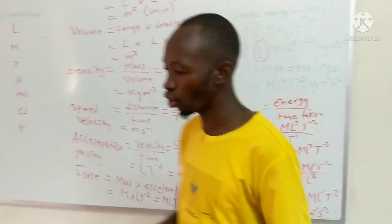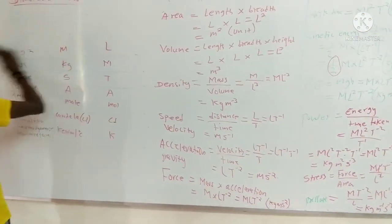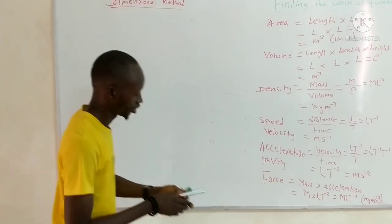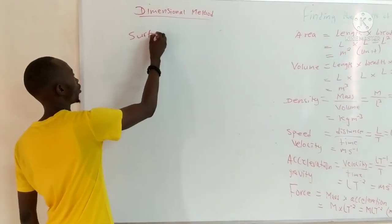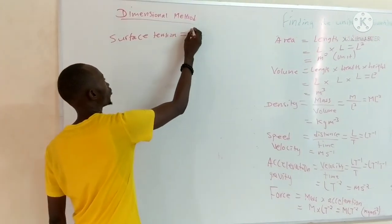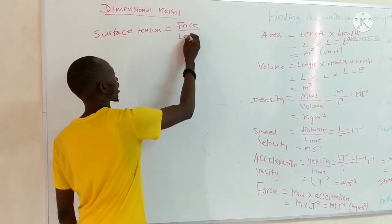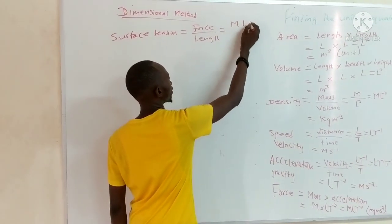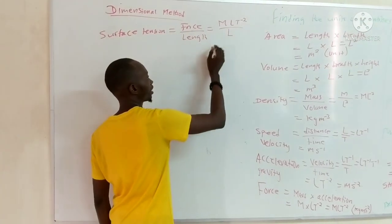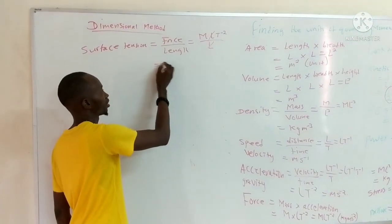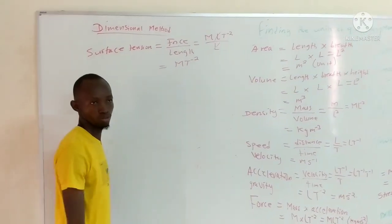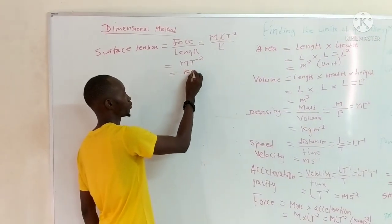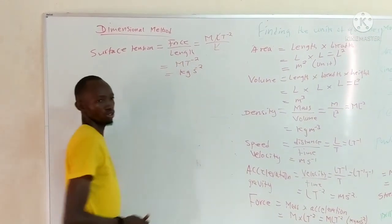Let's consider surface tension. Surface tension is force over length. The dimension of force is MLT⁻² and that of L is L. Cancelling the L, what remains is MT⁻². So the dimension of surface tension is MT⁻², and its unit is kilograms per second squared (kg·s⁻²).